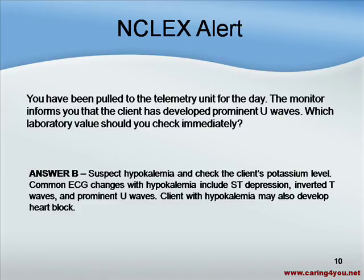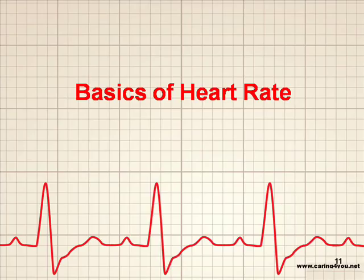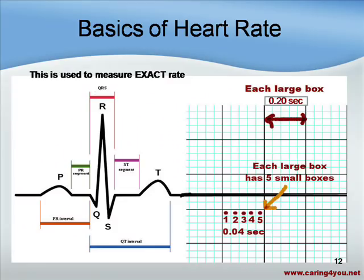Now let's continue with the basics of heart rate. On the presentation you will see big boxes and five little boxes, used to measure the exact rate. Each large box on a 6-second EKG strip is 0.2 seconds. In between the larger boxes we have five small boxes, so each large box is made up of five small boxes. Each small box has an interval of 0.04 seconds.